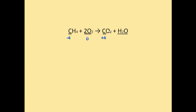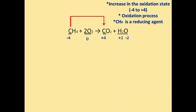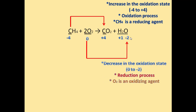Carbon is positive four in carbon dioxide — we get this from the equation: we have two oxygen atoms, each with an oxidation state of negative two, so with some math we get carbon to be positive four. For the water molecule, hydrogen is positive one and oxygen is negative two. Looking at carbon inside the methane molecule: it was negative four and then turned to positive four — an increase in oxidation state — so methane is considered the reducing agent. Oxygen was zero and then turned to negative two — a decrease in oxidation state — so reduction took place and oxygen is the oxidizing agent.